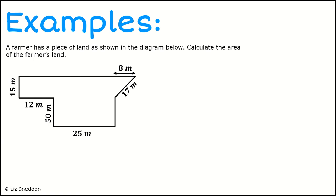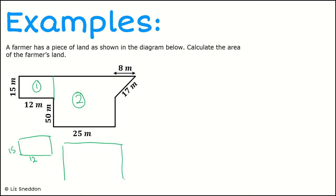Let's have a look at this second example. This is looking at the area of a piece of land that a farmer has. Let's break this up into smaller bits. Drawing a line down, we have a rectangle here which is 15 metres by 12 metres — that's piece number one. Piece number two is another rectangle which is 25 metres wide. The total length of the side: this bit is 50 metres, and this bit is 15 metres, so that whole side together would be a side length of 65 metres.